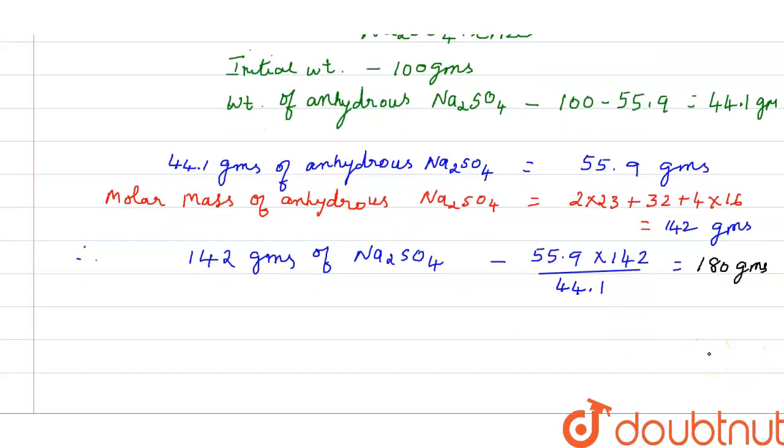Now we should know the moles of water. We have to convert this into moles of water molecules. How to calculate moles? It is very easy. Number of moles and we are talking about water equals to given mass by molar mass. What is the given mass? 180 grams. What is the molar mass of water? 2 plus 16, 18. And what is the answer? 10. This is the molecules of water.